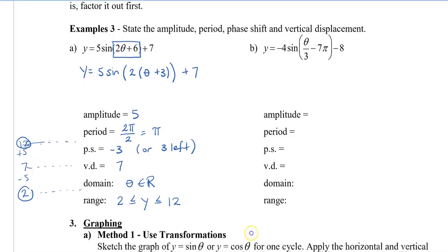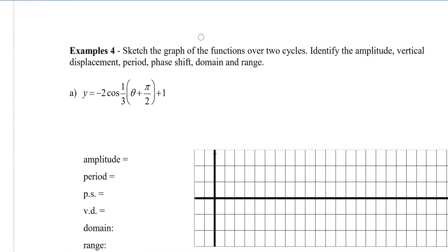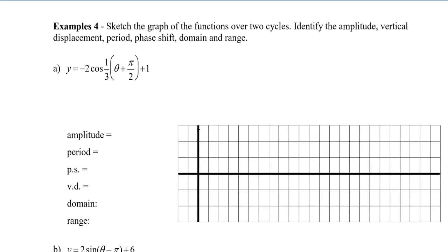Now we're going to combine all of this to graph using key points. Let's do a cosine example and sketch it over two cycles. The amplitude is 2, the period is 2π ÷ (1/3) = 6π, the phase shift is +π/2 so we move negative π/2 (to the left), and the vertical displacement is 1. The domain is all real numbers, and we'll determine the range from the graph.